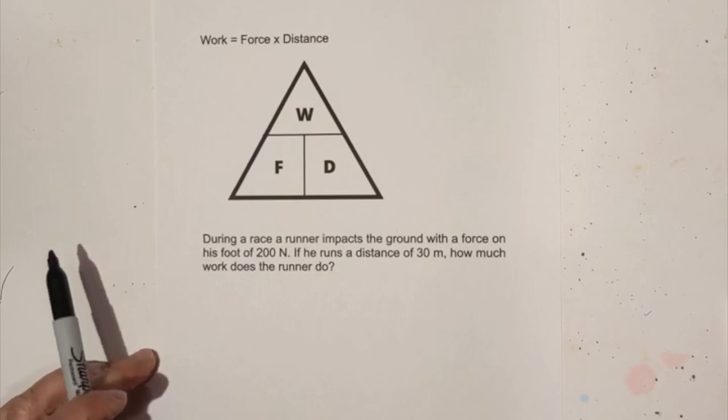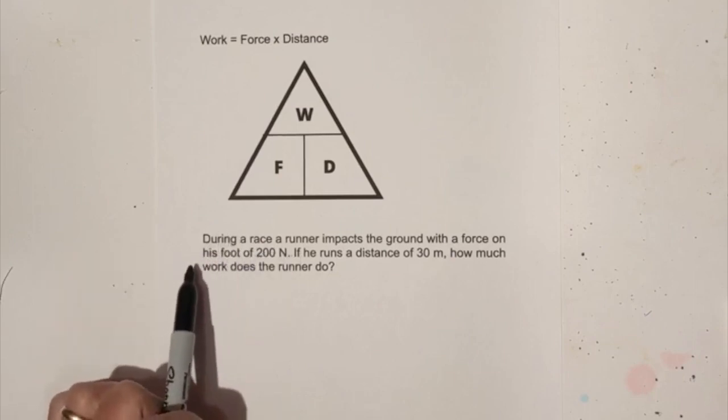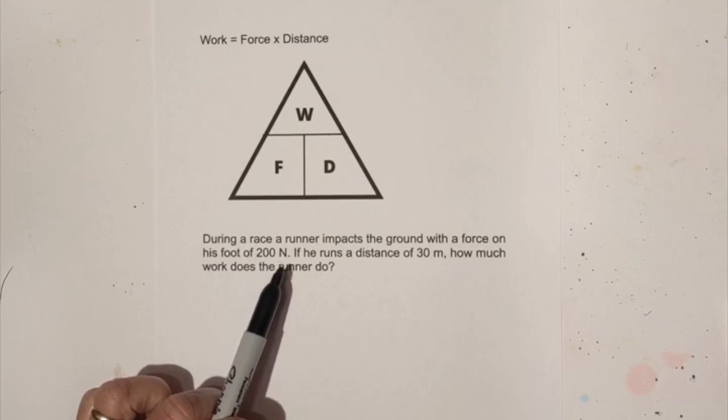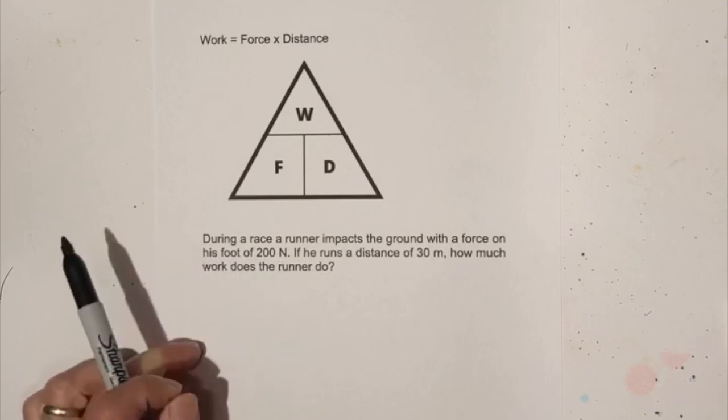Let's get started on this first example. During a race a runner impacts the ground with a force on his foot of 200 newtons. If he runs a distance of 30 meters, how much work does the runner do?